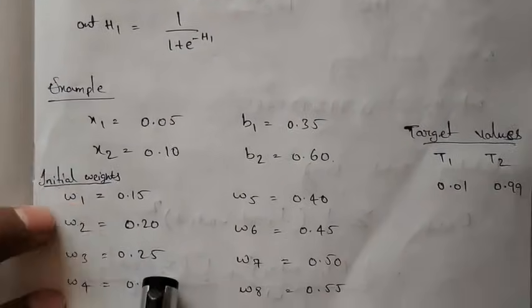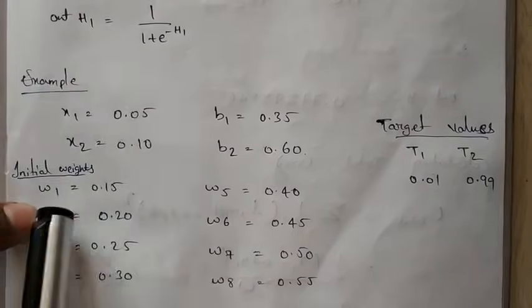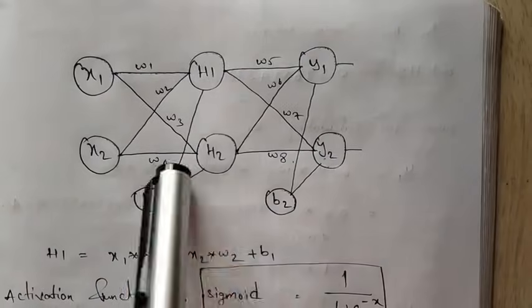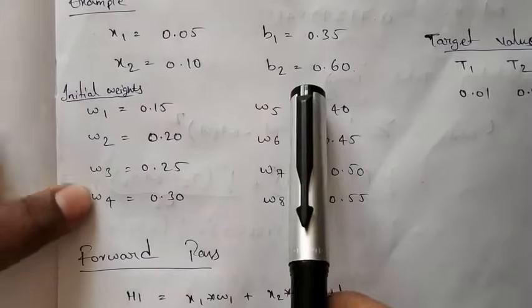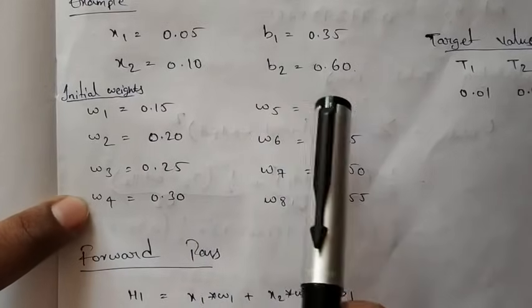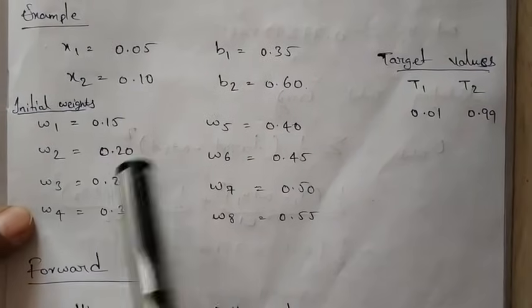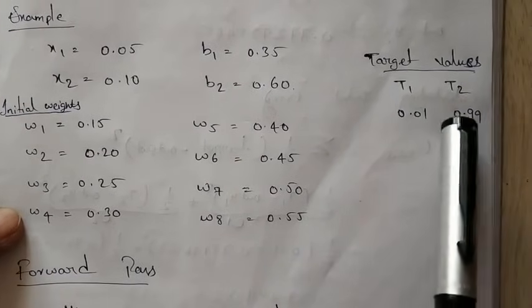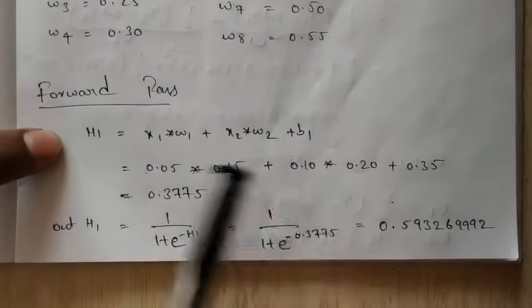Consider an example. These are the input values: x1 and x2. And these are the weights. We have seen this network — in this network, these weights are randomly initialized. The weights and biases can be any values. But these are the fixed input values, and our target values — the output we should get — are given. Now we will calculate. First, we will do a forward pass.